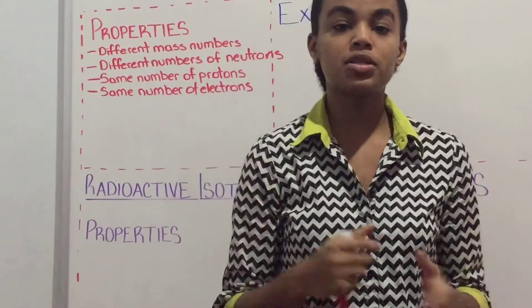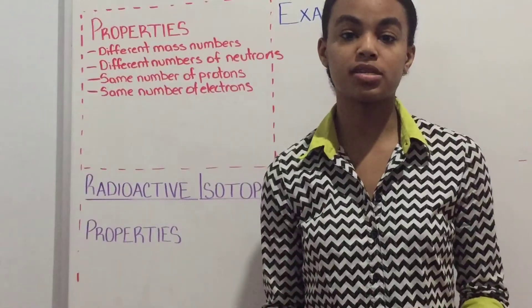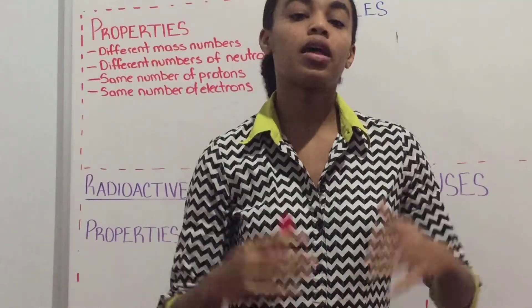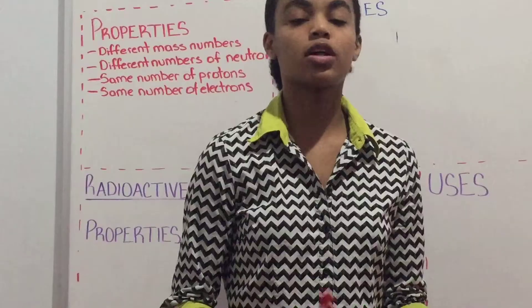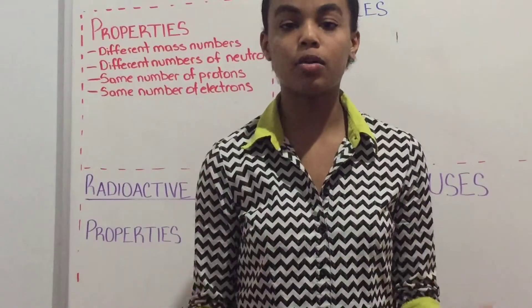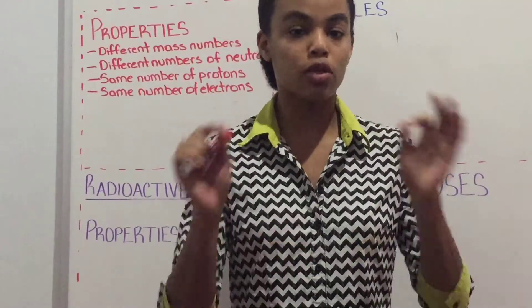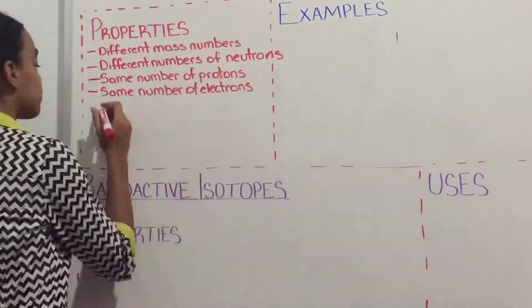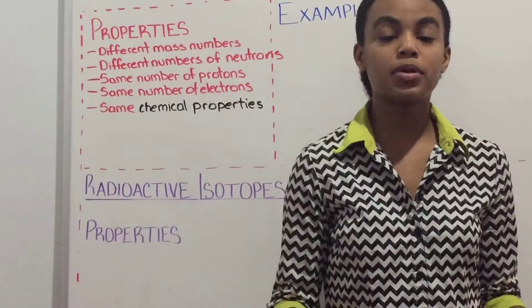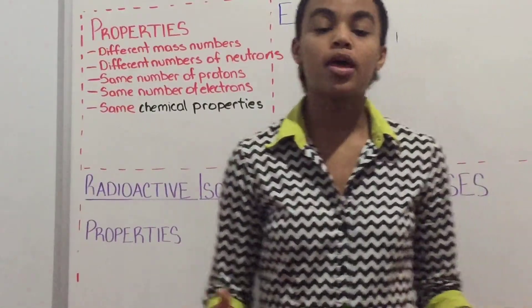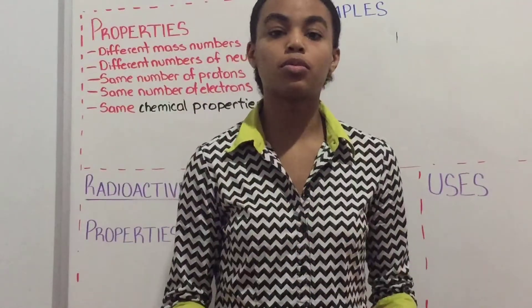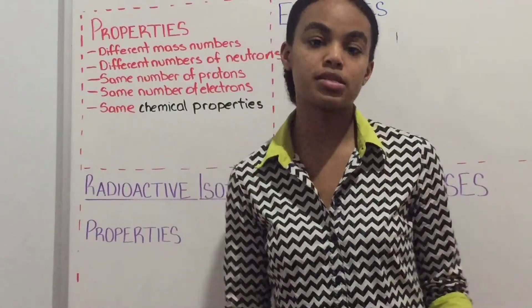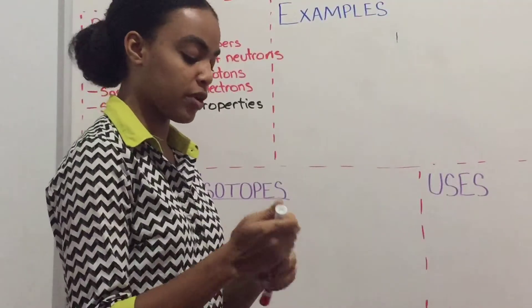The two main properties we're going to talk about now are chemical and physical properties. Because these two isotopic atoms are part of the same element, they have the same chemical properties. Chlorine-35 and chlorine-37 will have the same chemical properties as each other because they are both the chlorine element. However, because these isotopes have different mass numbers and different numbers of neutrons in their nucleus, they will have different physical properties.